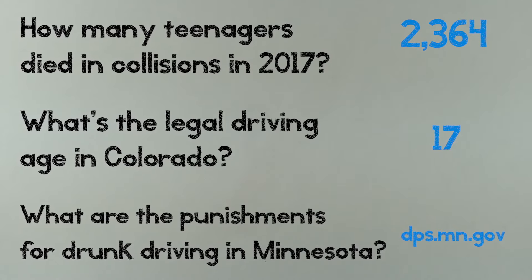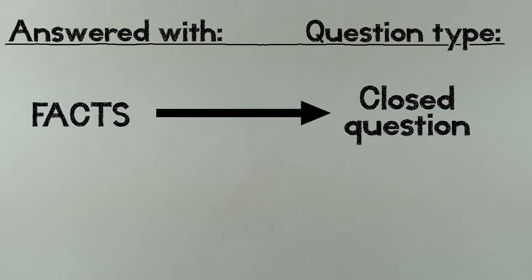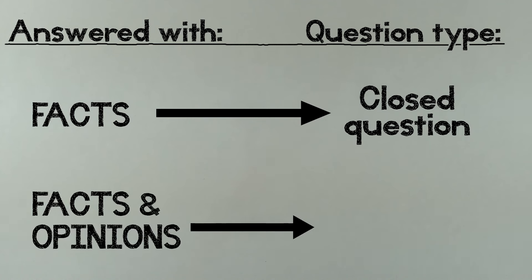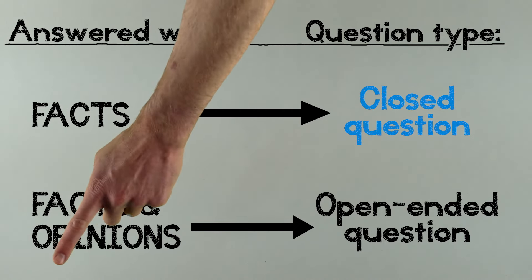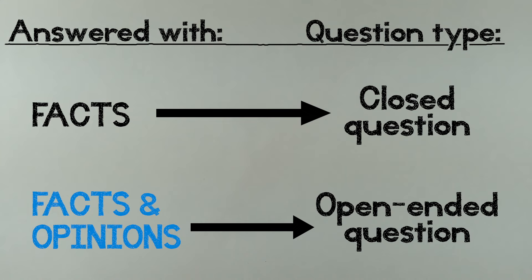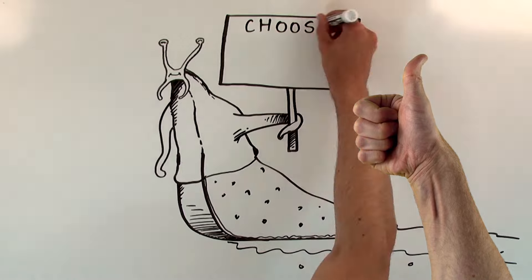So when you're looking at a research question and want to know if it's open-ended or not, remember this. If it can be answered with a fact, it's a closed question. If it can only be answered by a fact combined with an opinion, then it's an open-ended question. Once again, if the answer can be a fact, that means the question is closed and won't make for a good paper on its own. If the answer requires facts and opinions, that means the question is open, and open questions make for good papers.